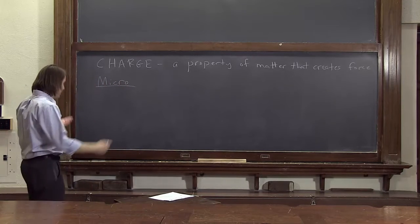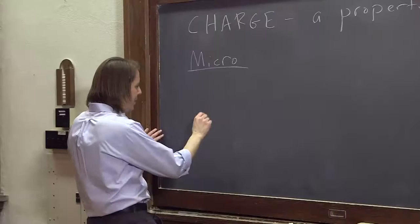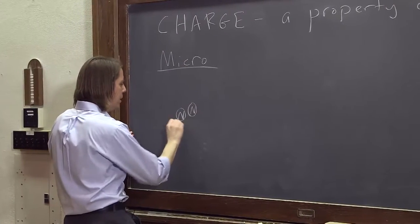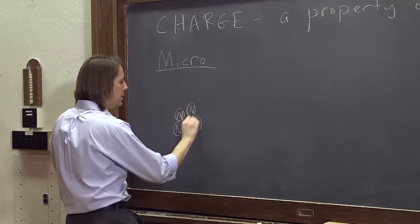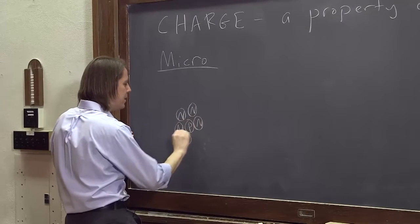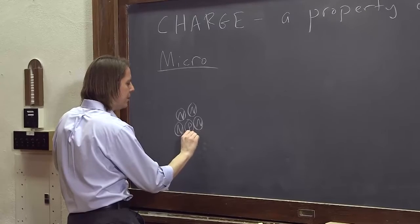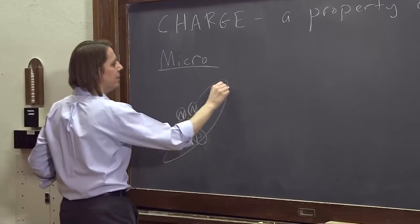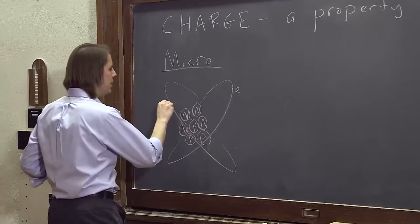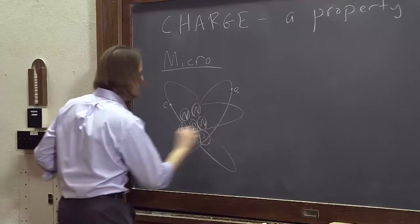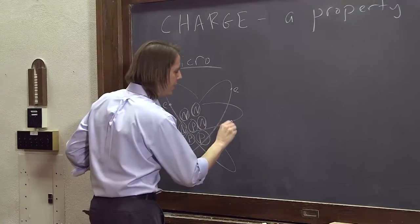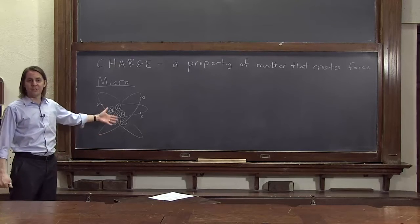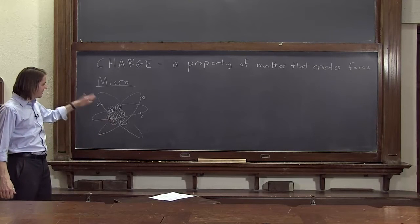To see where charge is at the microscopic scale, you have to draw something that you've probably seen before. N, N, N, N, P, P, P, and then like that, with an E out here, and an E out here, and an E out here. So you've probably seen this before. If you're from the 50s, you might be cowering under your desk. This is an atom.